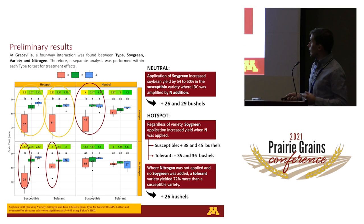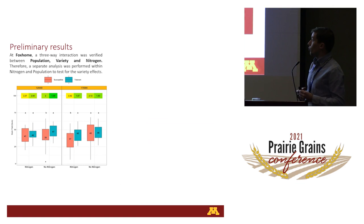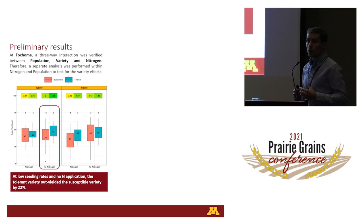In addition, where nitrogen was not applied and no soy green was added, the tolerant variety out-yielded the susceptible variety by 72%. From a farmer's standpoint, even without nitrogen carryover from the previous crop, in a hotspot area the farmer should definitely consider applying soy green — otherwise significant yield reductions can be expected.